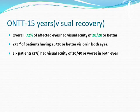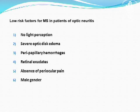Overall visual acuity recovery of 20/20 or better was seen in 72% of ONTT patients. Low risk factors for MS development included no light perception, severe disc edema, hemorrhages, retinal exudates, absence of periocular pain, and male gender.